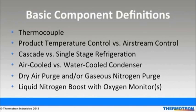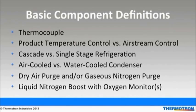Cascade refrigeration systems consist of two compressors that allow the chamber to go to minus 70 degrees Celsius. Single-stage refrigeration consists of one compressor that allows the chamber to typically go to minus 40 degrees Celsius. The chamber's refrigeration system can be cooled in one of three ways. Chambers with six horsepower compressors or smaller can be cooled with an onboard air or water-cooled condenser. Chambers with six horsepower compressors or larger can be cooled with either water-cooled or remote air-cooled condensers.